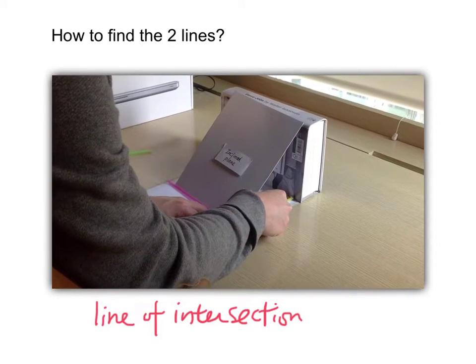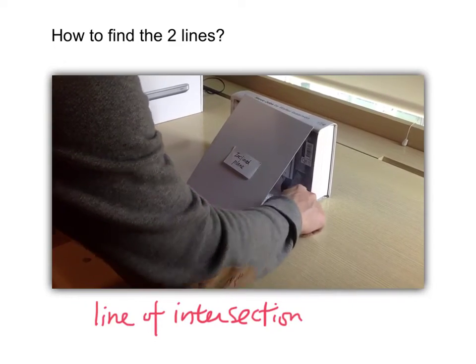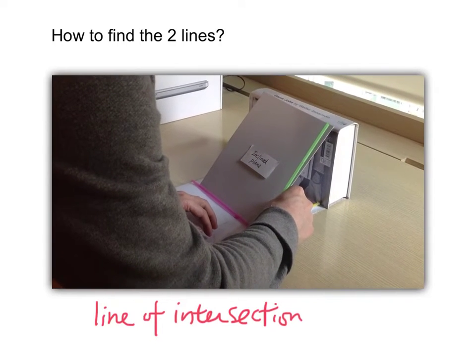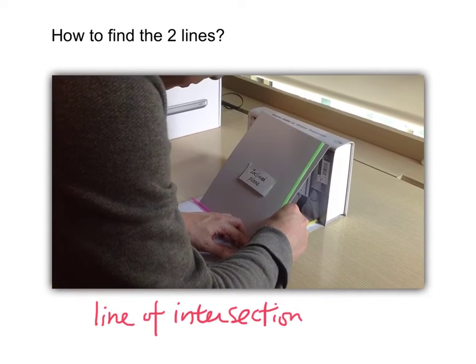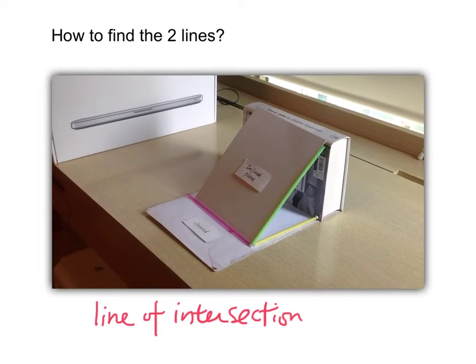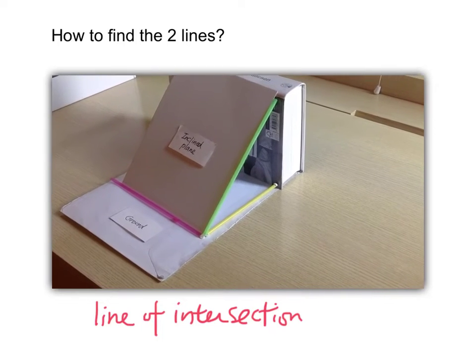Second step: we have to find two lines which will be perpendicular to the red straw - the yellow one and the green one. The yellow one will be lying on the ground and the green one will be lying on the inclined plane. These two lines should lie on the two planes which we are interested in.